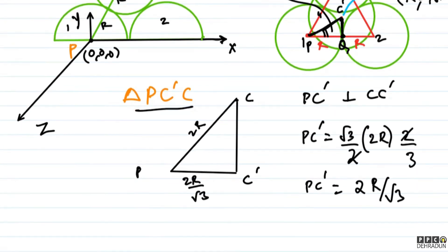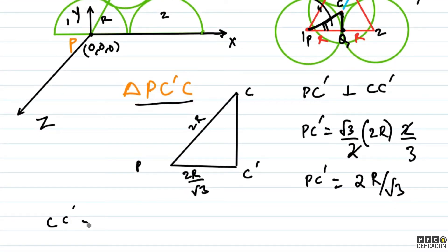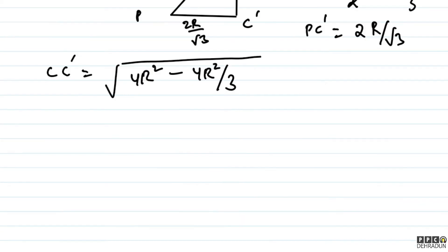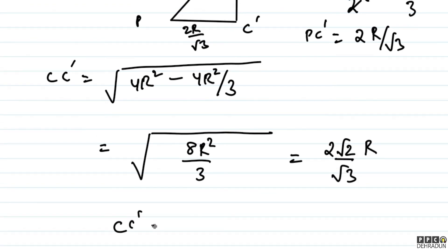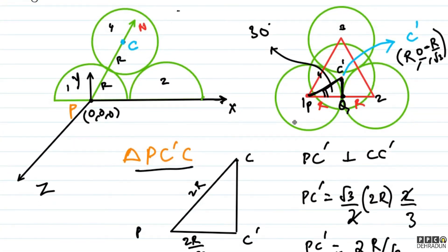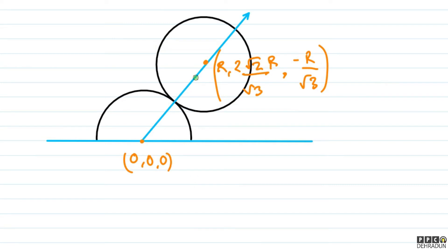So PC' = 2r/√3 and PC = 2r. Since triangle PCC' is right-angled at C', we get CC' = √(PC² − PC'²) = √(4r² − 4r²/3) = √(8r²/3) = 2√2 r / √3. This CC' gives us the y-coordinate of point C, which is the center of the solid sphere. So the y-coordinate of C is 2√2 r / √3.